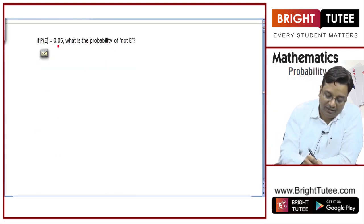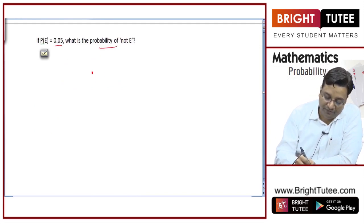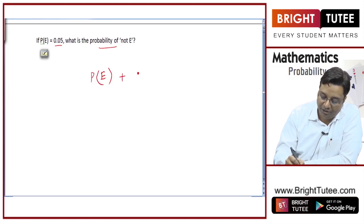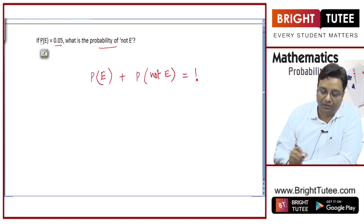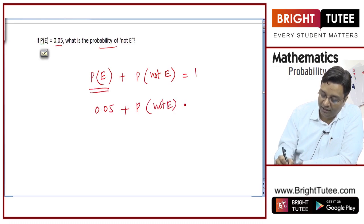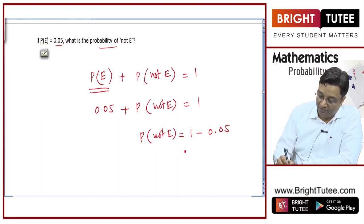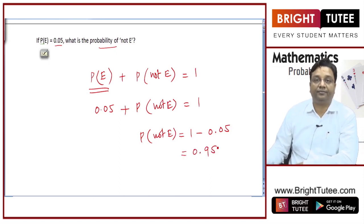The probability of event E is 0.05 — what is the probability of not E? We know that P(E) plus P(not E) equals 1. Since P(E) is 0.05, the probability of not E will be 1 minus 0.05, which equals 0.95.